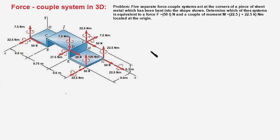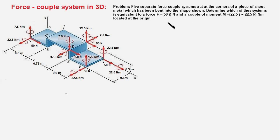I have a question for you. Can you tell me, only by visual inspection, which of these systems is not equivalent to this force couple system acting at point O? You don't have to do any calculation — merely inspect and carefully examine these force couple systems acting at different points. Feel free to pause the video and do a thorough check.